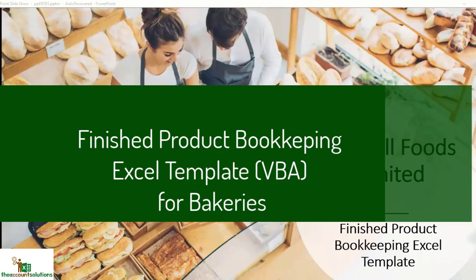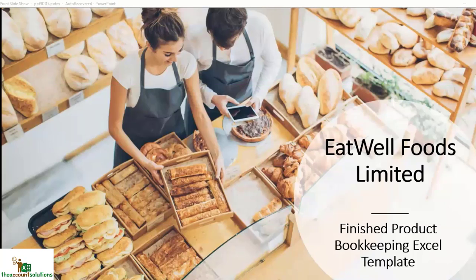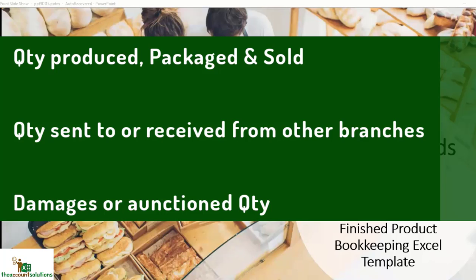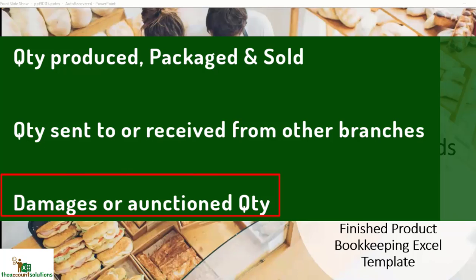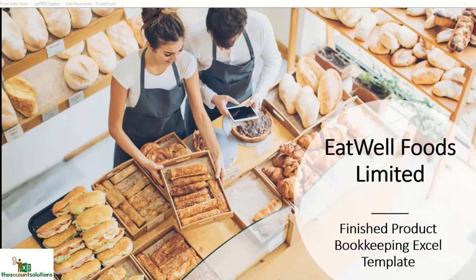In this tutorial I'll be showing you how to use the finished product bookkeeping Excel template for bakeries. This template will enable you to track: quantity of goods produced, quantity of goods produced and packaged, quantity of goods produced, packaged and sold, quantity of goods sold to branches or sent to other branches, goods received from other branches, goods that got bad or missing, and goods that are expired.